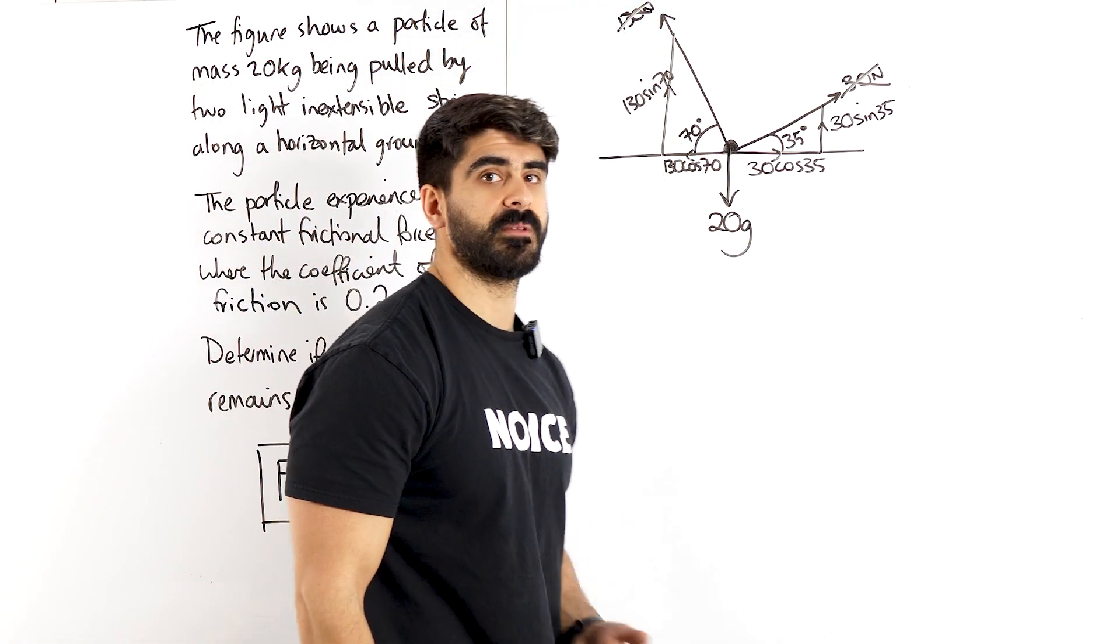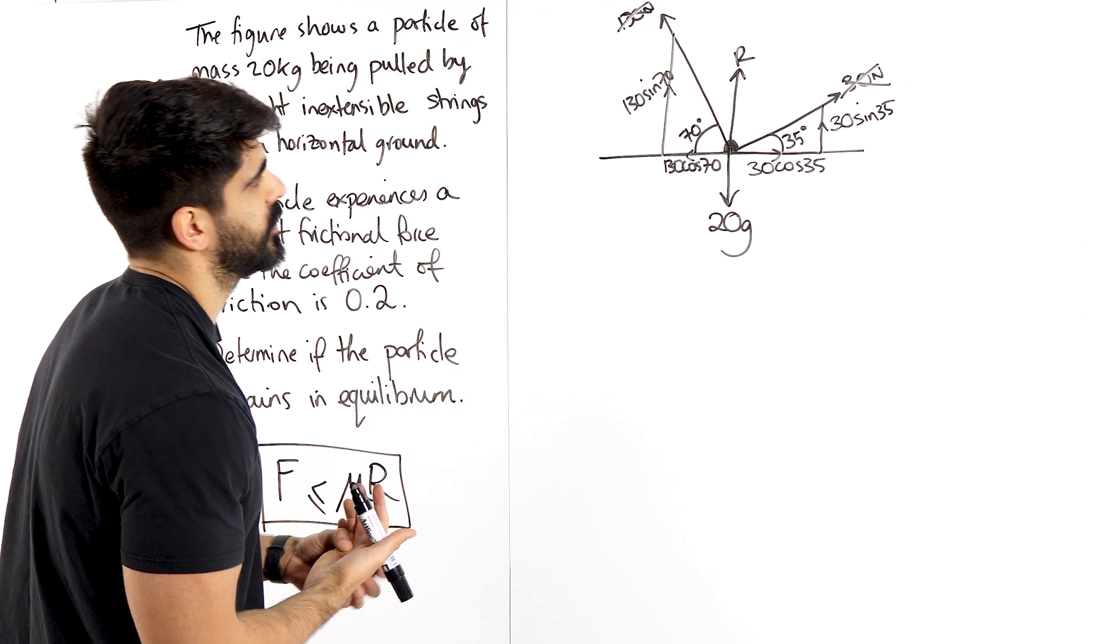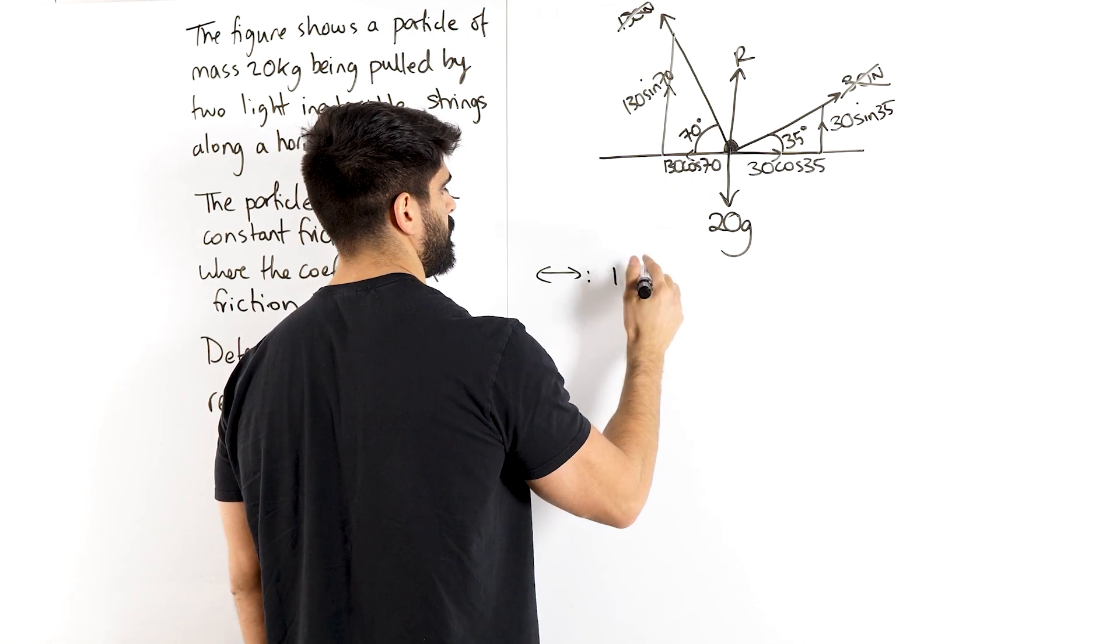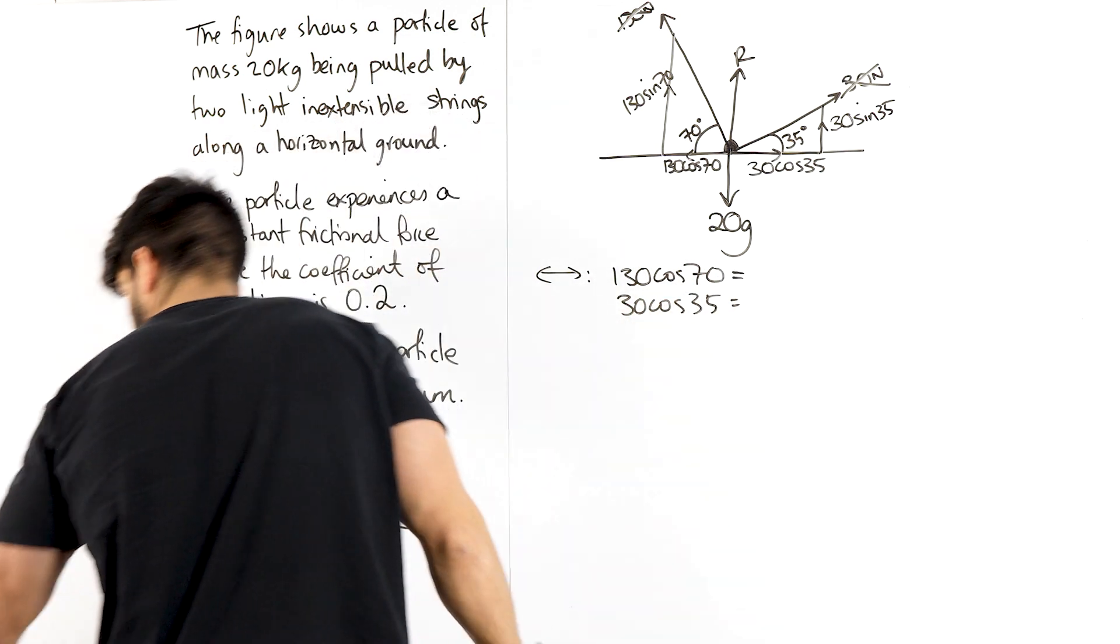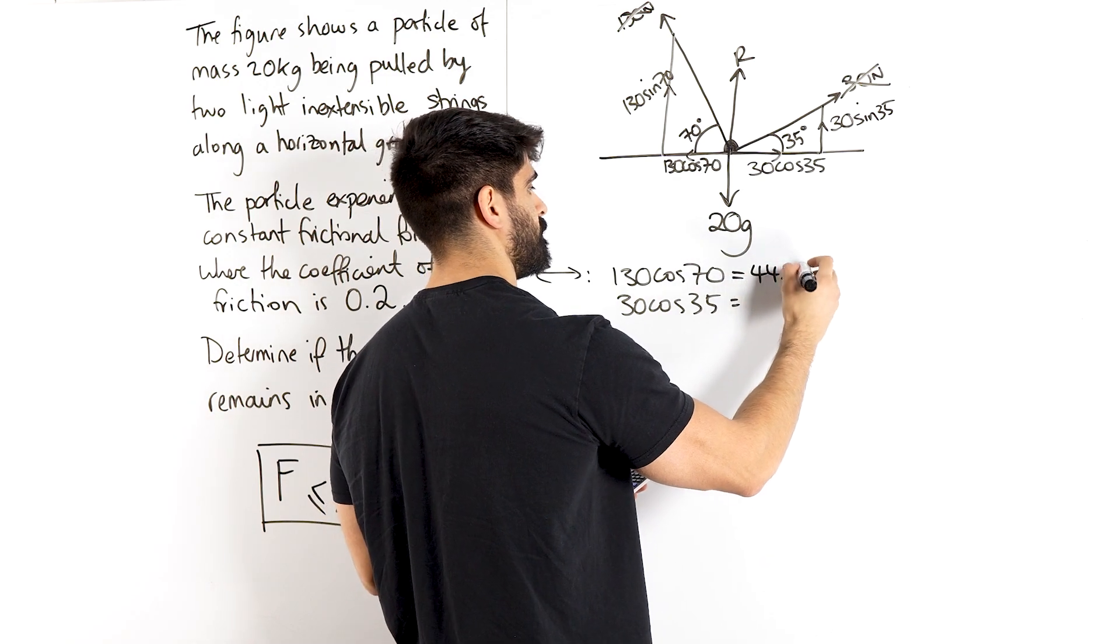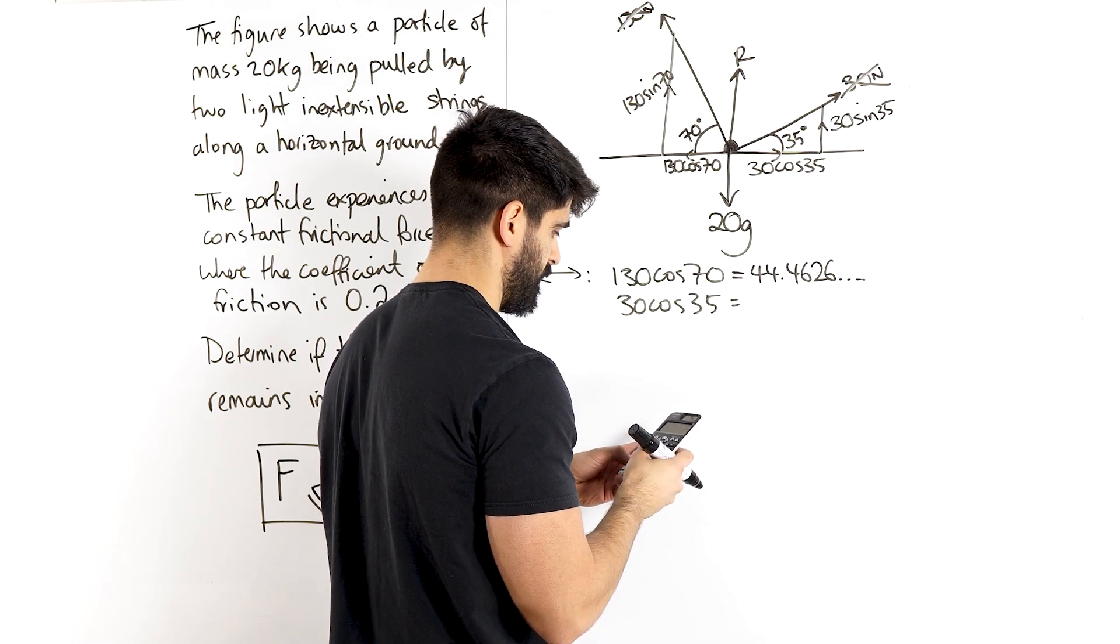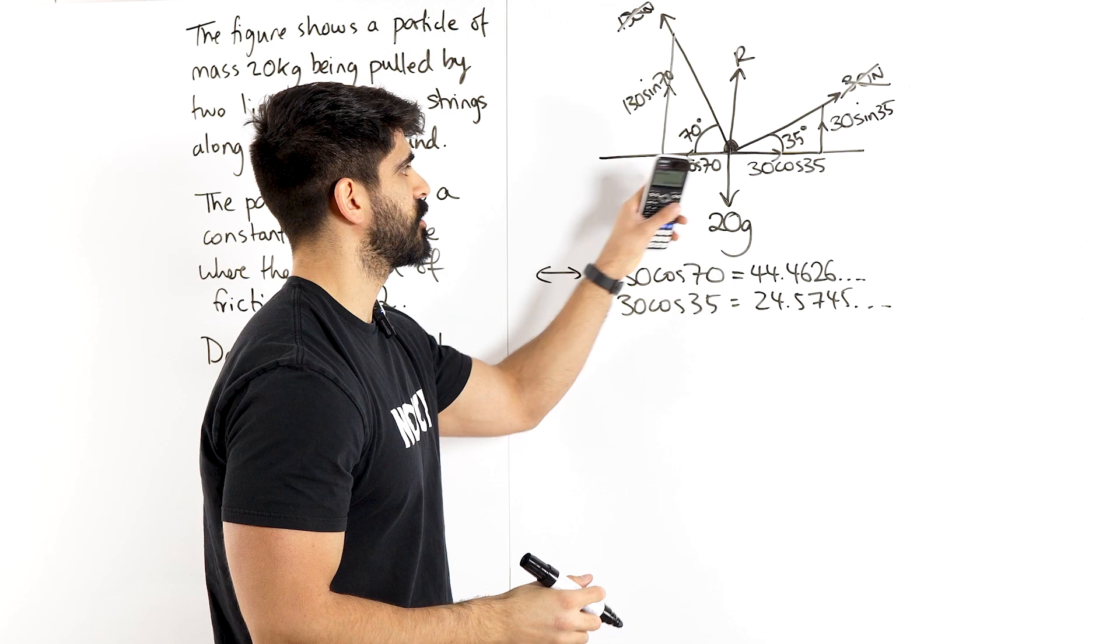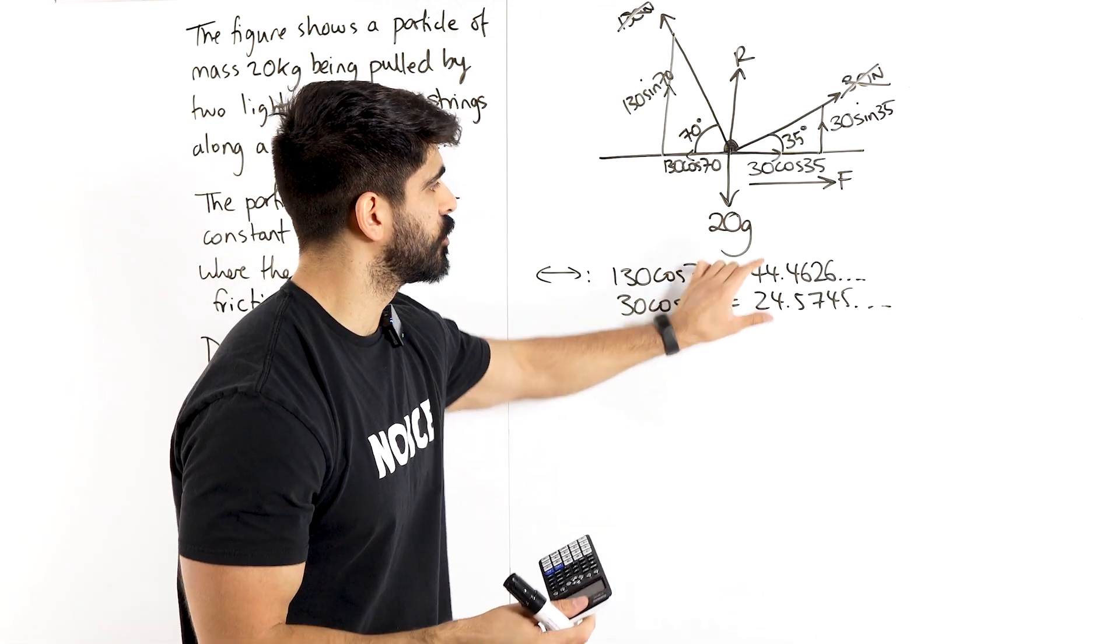From here we can determine which way friction is pointing, but also we have the reaction force. Don't forget that. You would have figured that out because you would have written then friction depends on R. So let's determine which way friction is actually pointing. For that we're going to have to calculate these values separately. So 130 cos 70 and 30 cos 35. So what do they give me? 130 cos 70 is 44.46. Then we have 30 cos 35 is 24.5745. Now you can clearly see that this one's larger. So this one's larger. Friction is going to have to point this way.